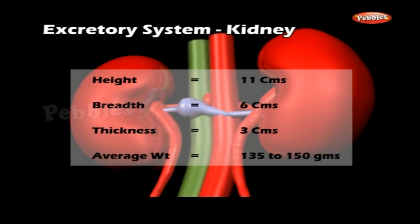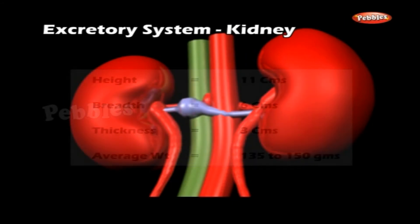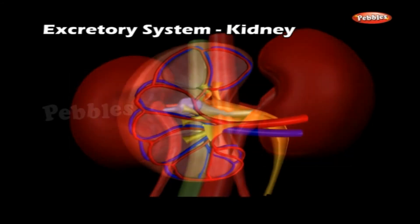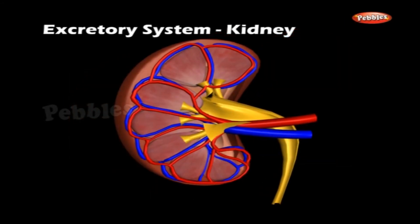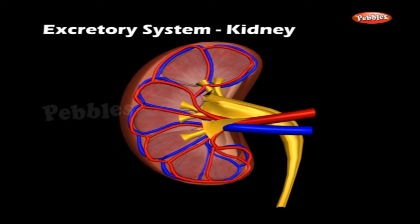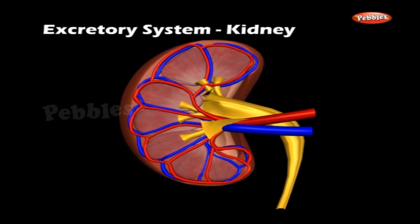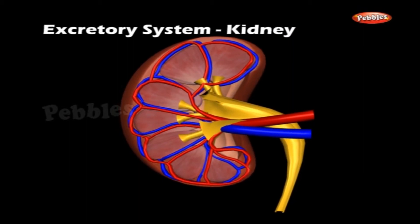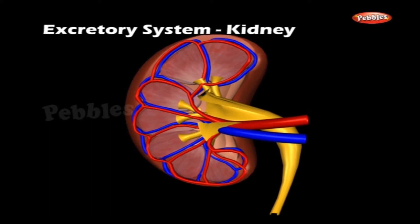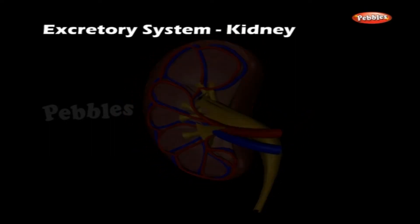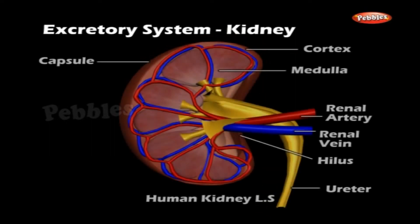Each kidney is covered by a fibrous connective tissue membrane called the capsule. The outer surface of the kidney is convex, while the inner surface is concave. The depression found in the middle of the inner concave region is known as the hilus.